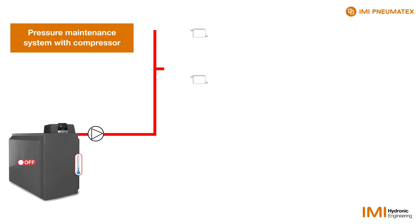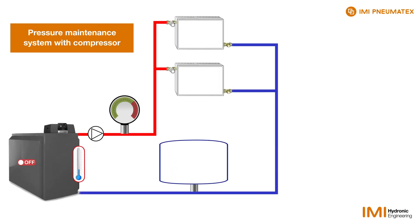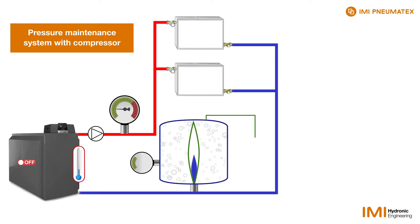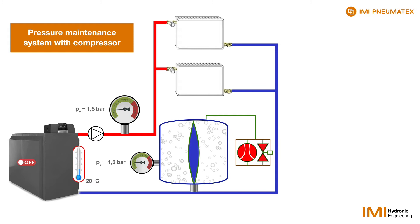We are looking at a heating plant that is protected by a pressurisation system with a compressor. The manometer indicates an initial pressure of 1.5 bar in the system's cold state.